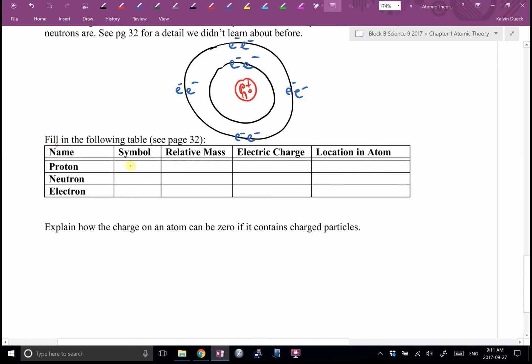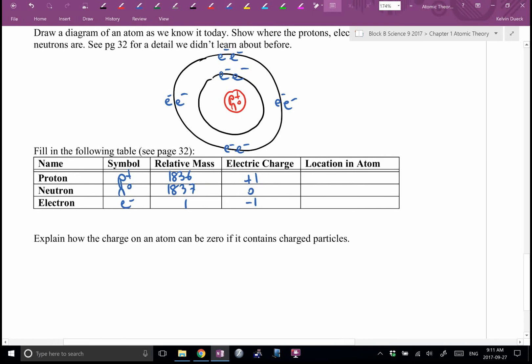So, symbol, P plus, N zero, E minus, relative mass, one, what did I say it was, 1836 and then 1837 for the neutron. Electric charge, positive one, zero, negative one. And then location, this might be, in fact, I'll even tell you, I'm going to ask you to fill in this chart, except I don't think I'm going to freak out about the relative mass, but absolutely symbol, charge, and location. You're going to get that chart on your test. Where is the proton located in an atom? What about the neutron? What about the electron? Yep.